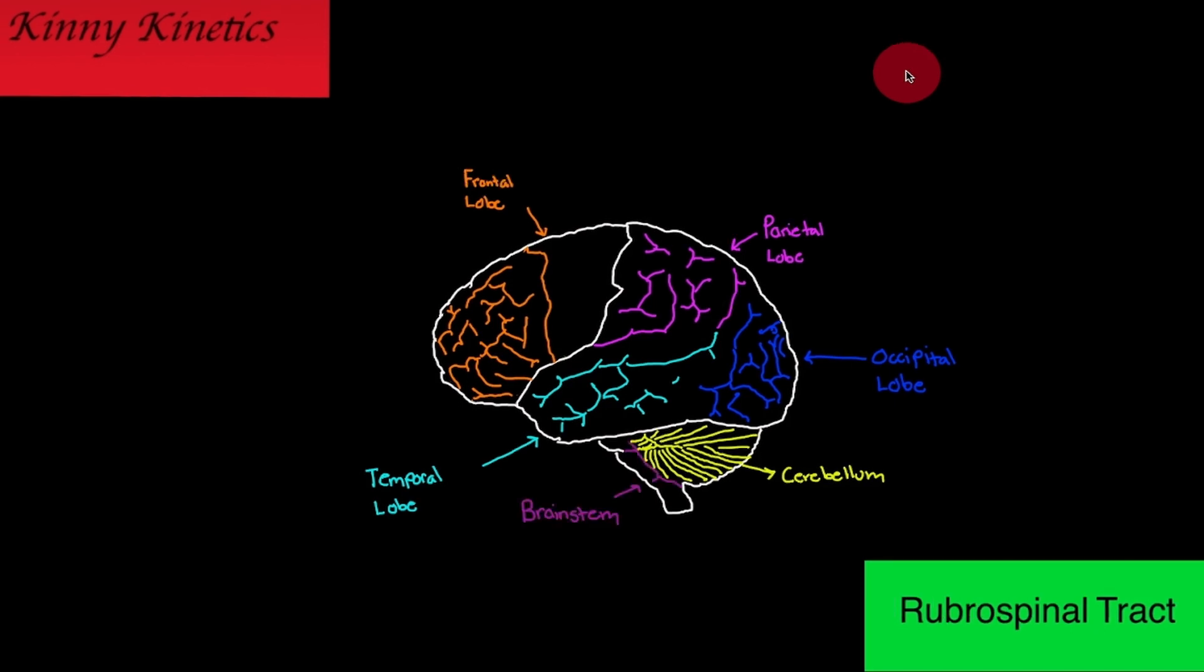The frontal lobe has structures that are important for the rubrospinal tract. These structures are the primary motor cortex, the premotor cortex, and the supplemental motor area. These structures play different roles in conducting the motor command from the brain to the spinal cord.